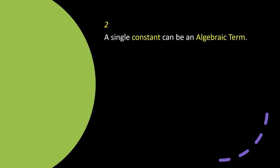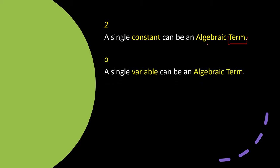A single constant can also be an algebraic term, or term — maybe it doesn't want to join with a variable and wants to stay single, and that's perfectly fine. Similarly, a single variable on its own can also be an algebraic term.